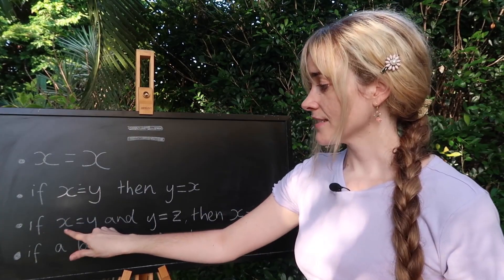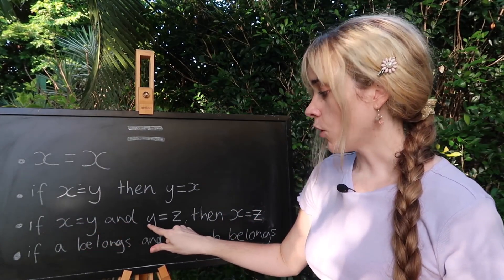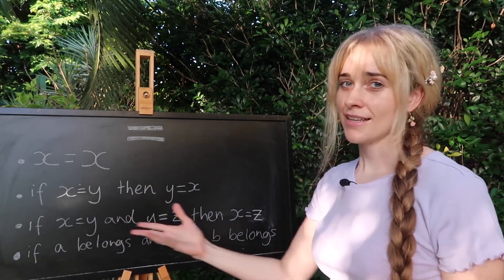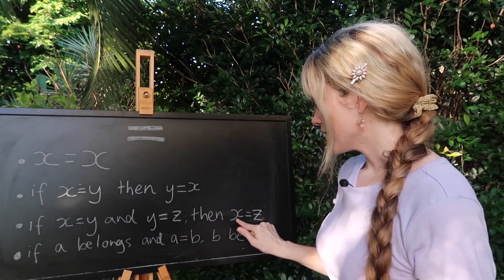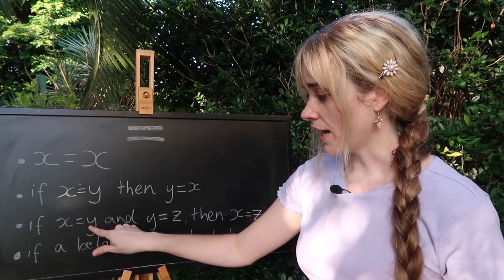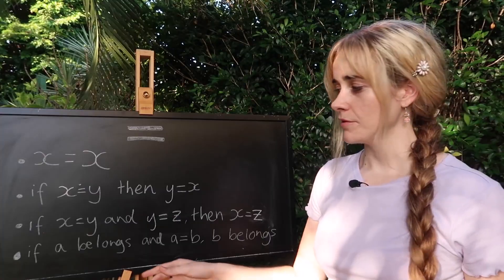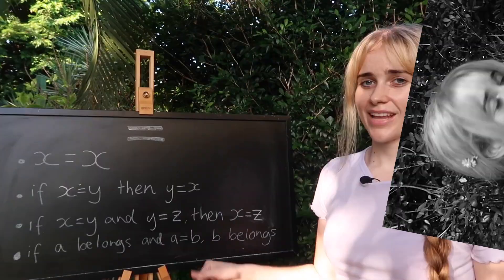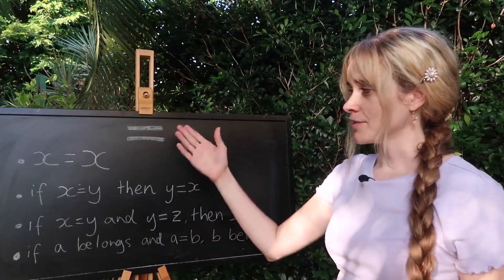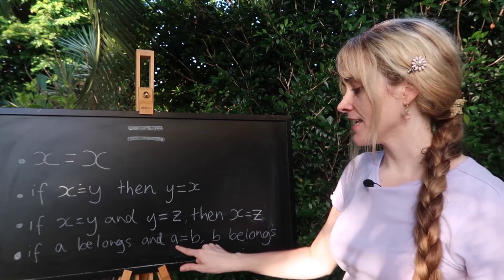Our second rule: if x is equal to y and y is equal to z, then following our logic here, x is going to be... Our rule is that if a is equal to something, or is it?